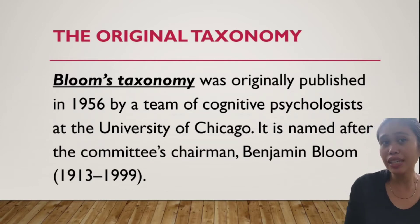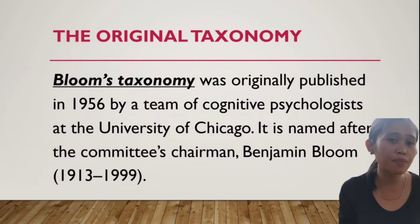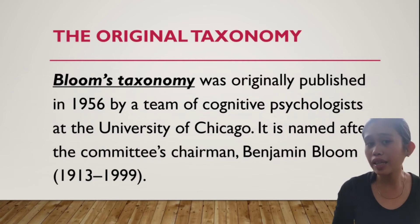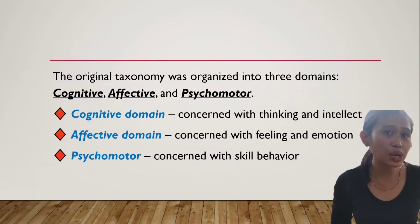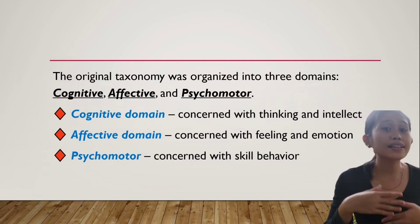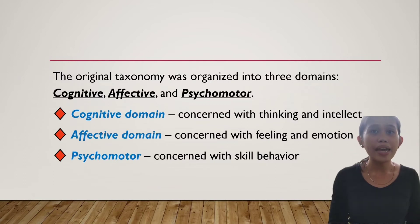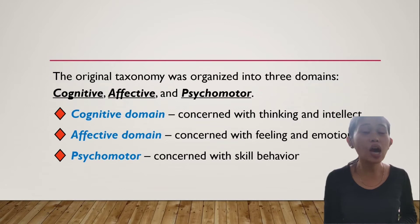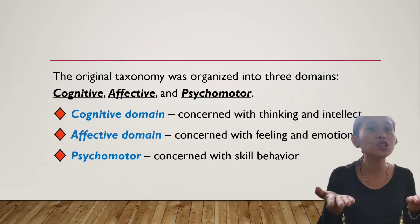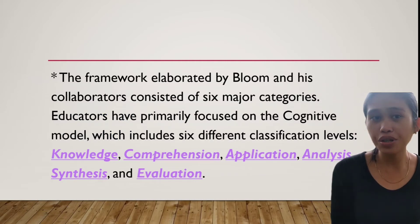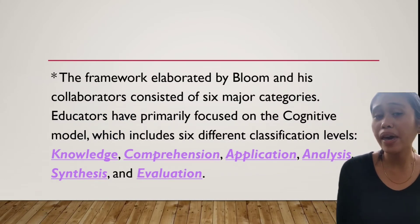The original taxonomy. Bloom's Taxonomy was originally published in 1956 by a team of cognitive psychologists at the University of Chicago. It is named after the committee's chairman, Benjamin Bloom, 1913 to 1999. The original taxonomy was organized into three domains: cognitive, affective, and psychomotor. The cognitive domain is concerned with thinking and intellect, the affective domain with feeling and emotion, and the psychomotor domain with skill behavior.